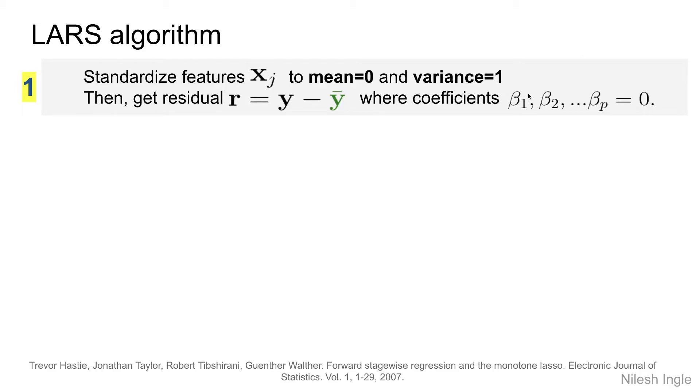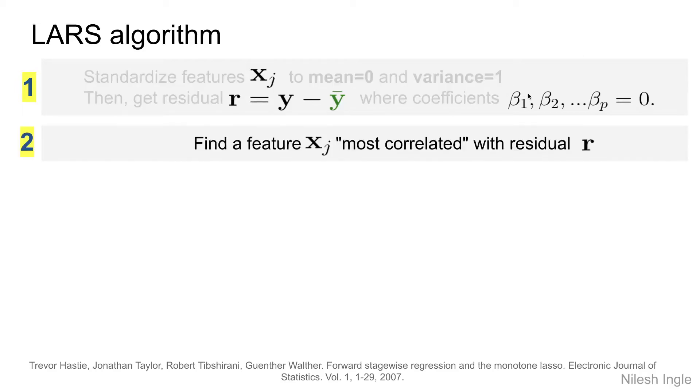Now, among all the features that we have, we want to find that one feature which is most correlated with the current residual that we have, which is based on just the intercept.